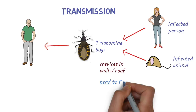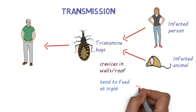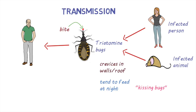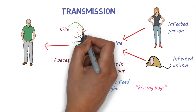They come out at night to feed on people's blood when they're sleeping. Because they tend to bite people's faces, they're sometimes called kissing bugs. Once they bite, these bugs can defecate on the person's skin. Their feces contain the parasites, which can then get into the person's body through the bite site, through mucous membranes, or if there's breaks in the skin.